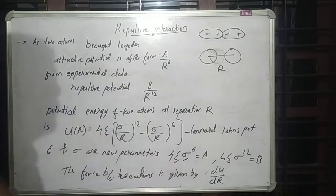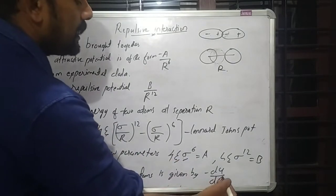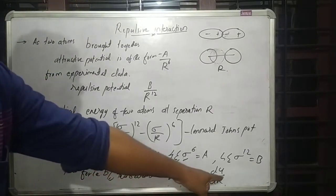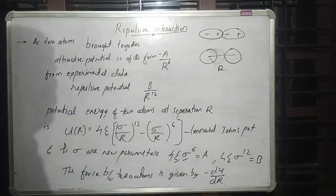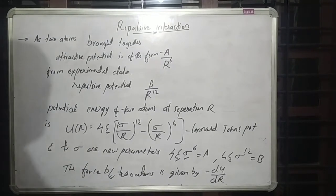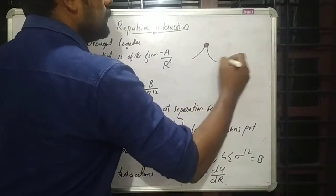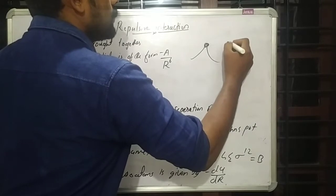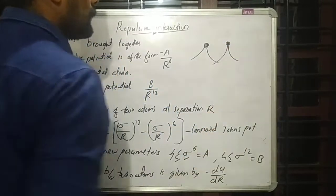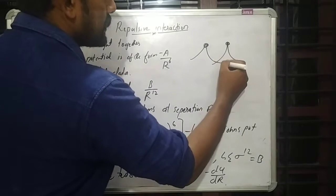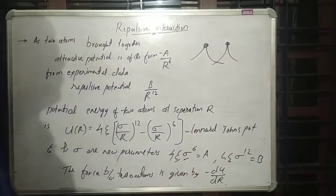The force between two atoms is given by the negative gradient of the potential energy, that is F equals negative dU divided by dR. When two atoms are brought close together, their energy distributions will overlap.